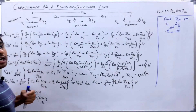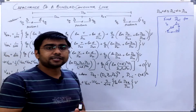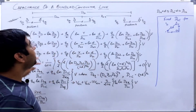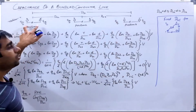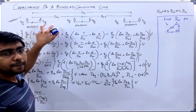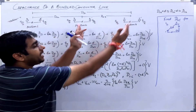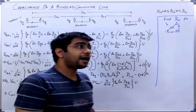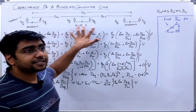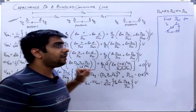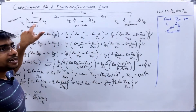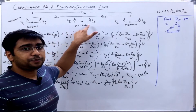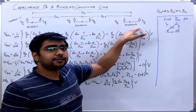Now let us see how to derive the capacitance of a bundled conductor line. Here I am showing a very simple configuration in which there are only two conductors per bundle, the spacing is flat, and we are also assuming that the line is transposed. I have shown here section 1 of the transposition cycle in which position 1 is occupied by phase A, position 2 by phase B, and position 3 by phase C.